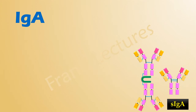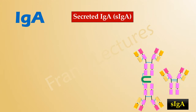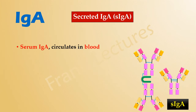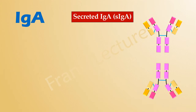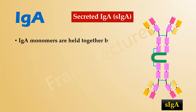Secreted immunoglobulin A is written as sIgA, where the letter S is in lowercase. It is also known as serum IgA since it circulates in blood. It can be a monomer, dimer, or rarely a trimer. The polymeric form of IgA is formed when two IgA monomers are held together by a glycoprotein known as J-chain.